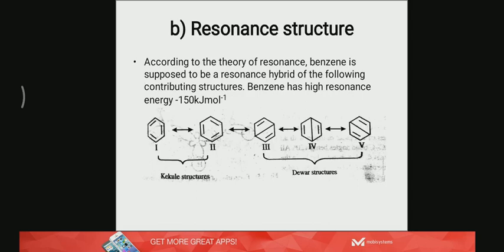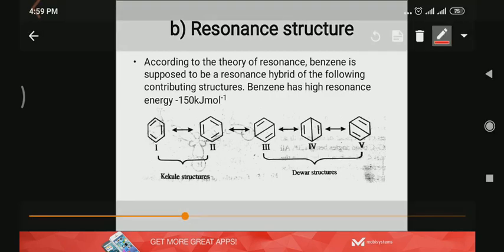According to resonance, you know that a molecule is represented by more than one Lewis structure, and the actual molecule is supposed to be a resonance hybrid or an intermediate structure of various contributing structures.